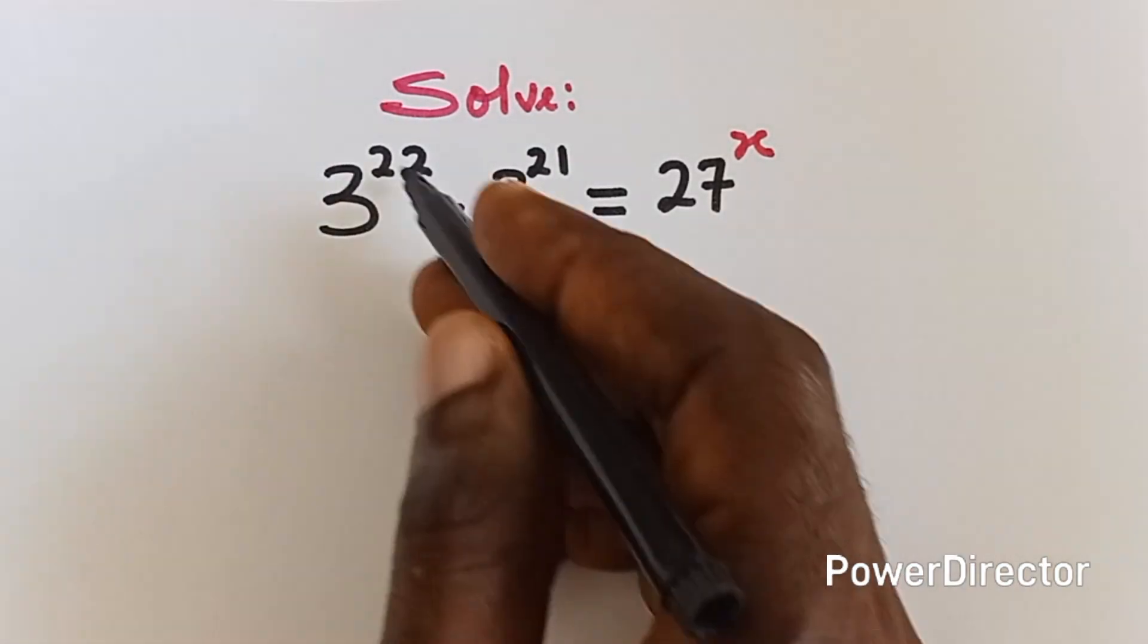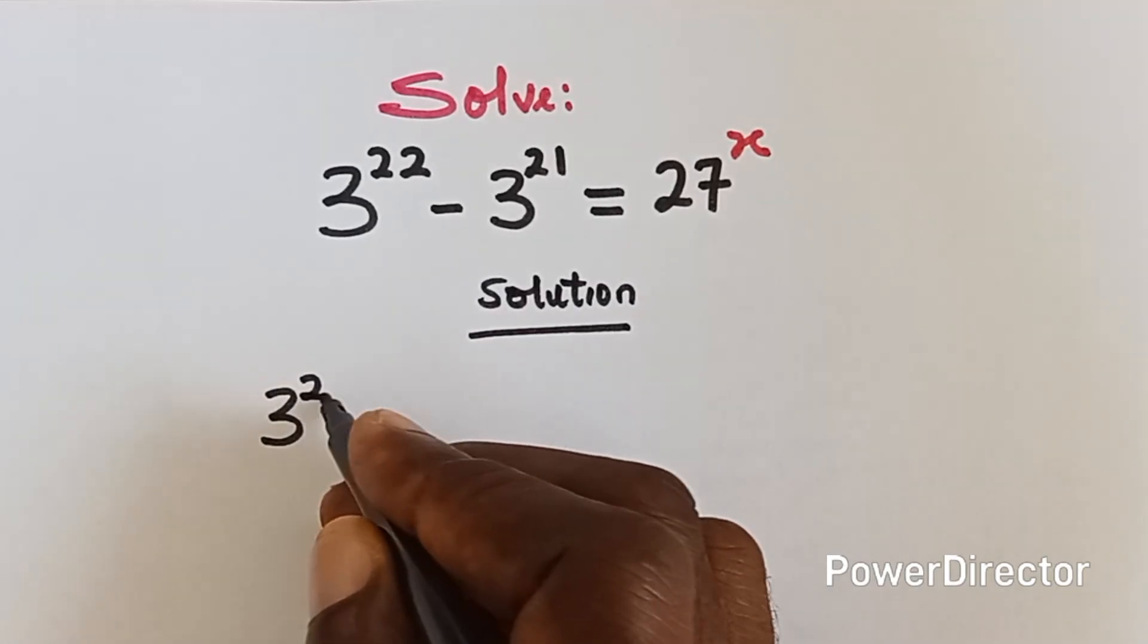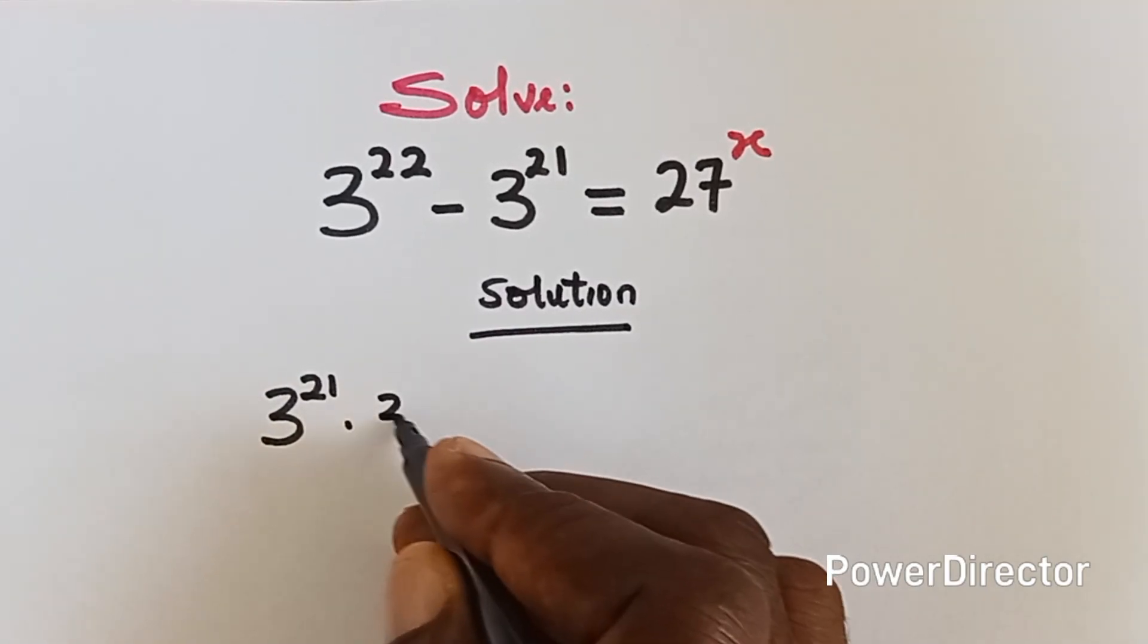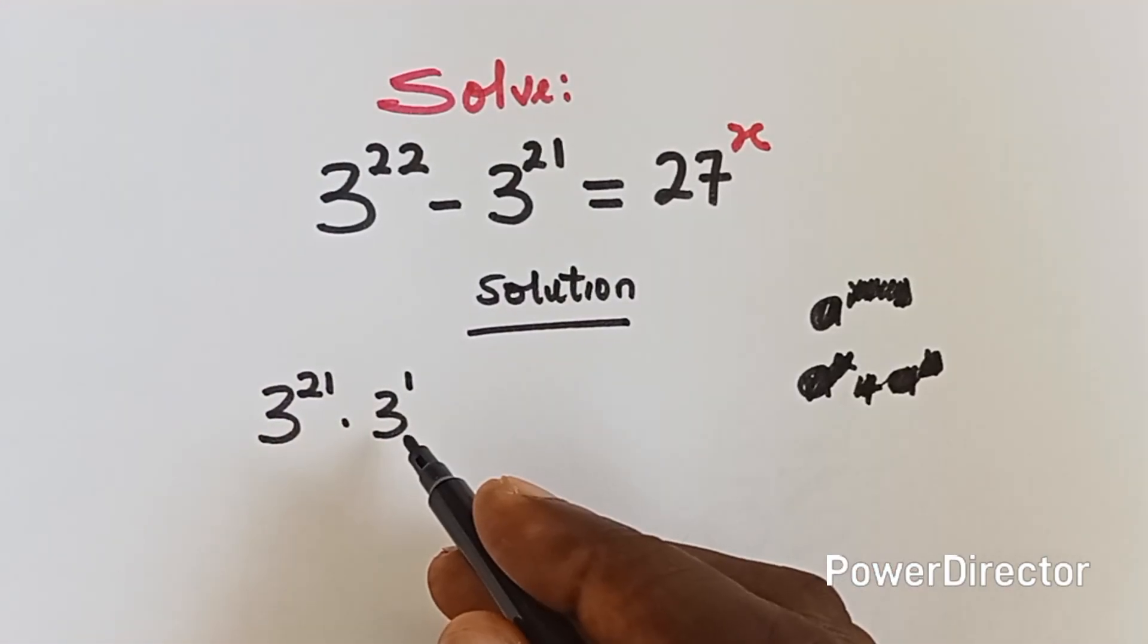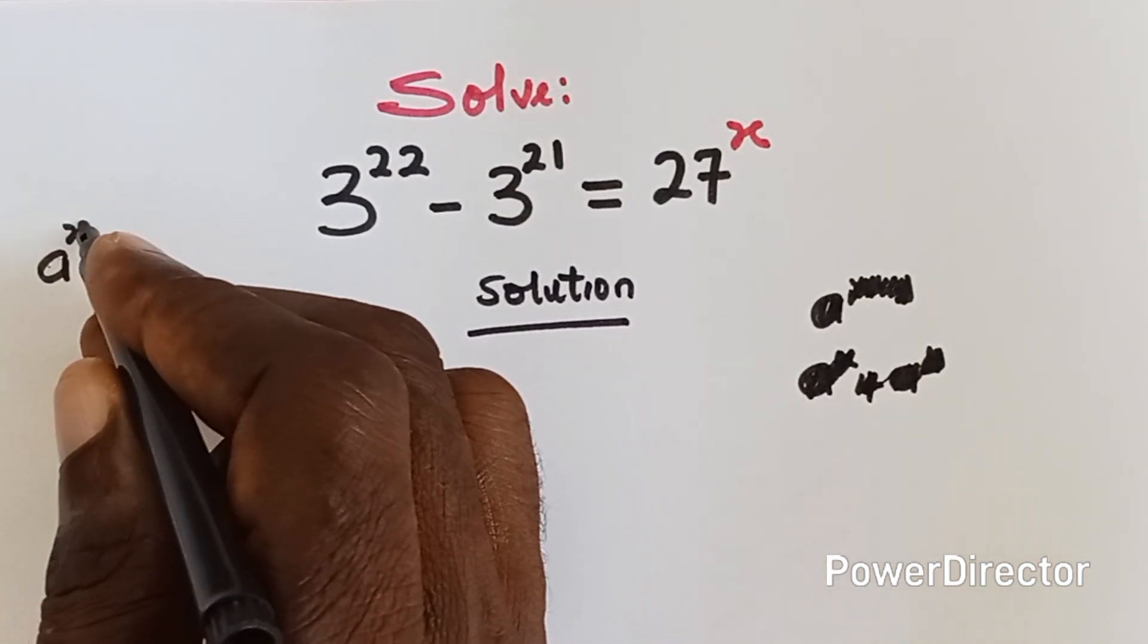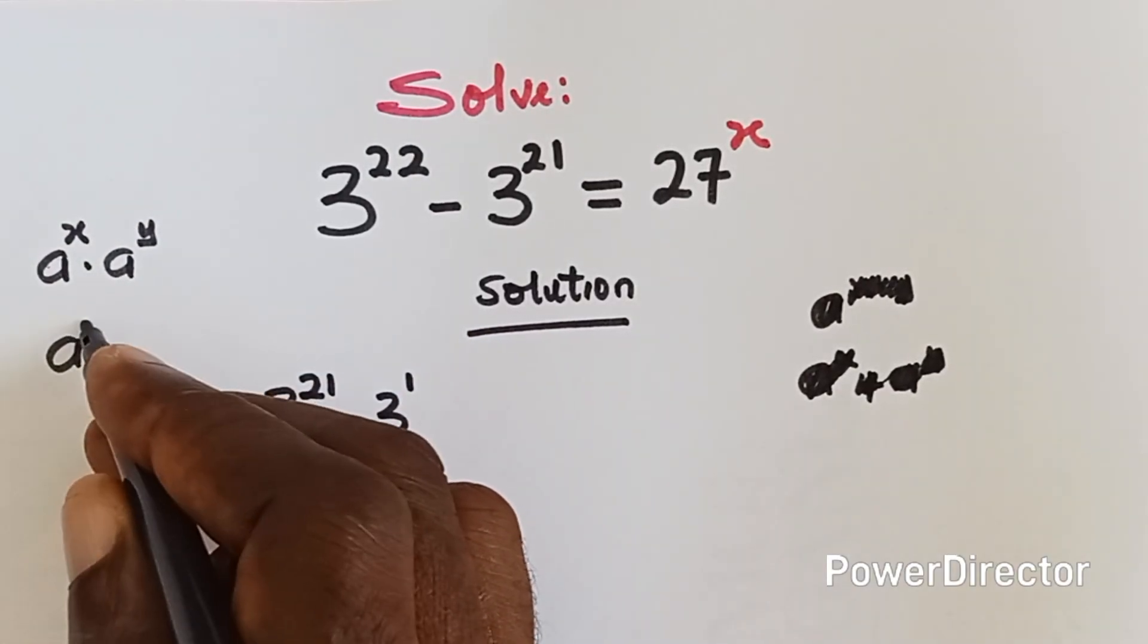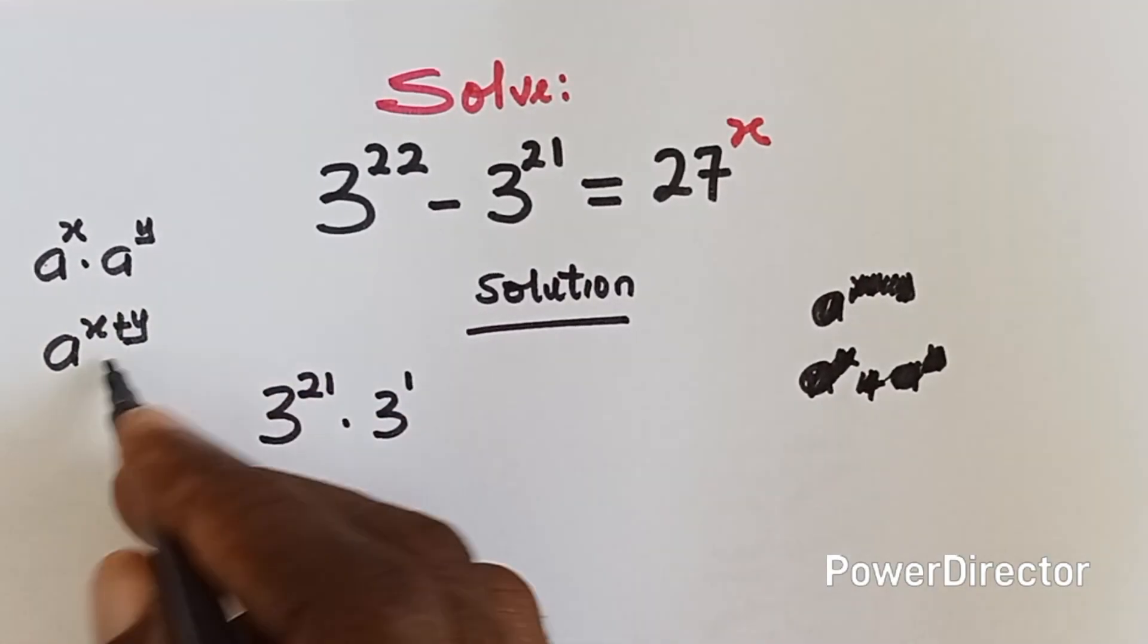All right, another way to write 3 raised to power 22 is 3 raised to power 21 multiplied by 3 raised to power 1. Okay, remember one of the laws of exponents that says that if you have a raised to power x multiplying a raised to power y, it's the same thing as a raised to power x plus y.